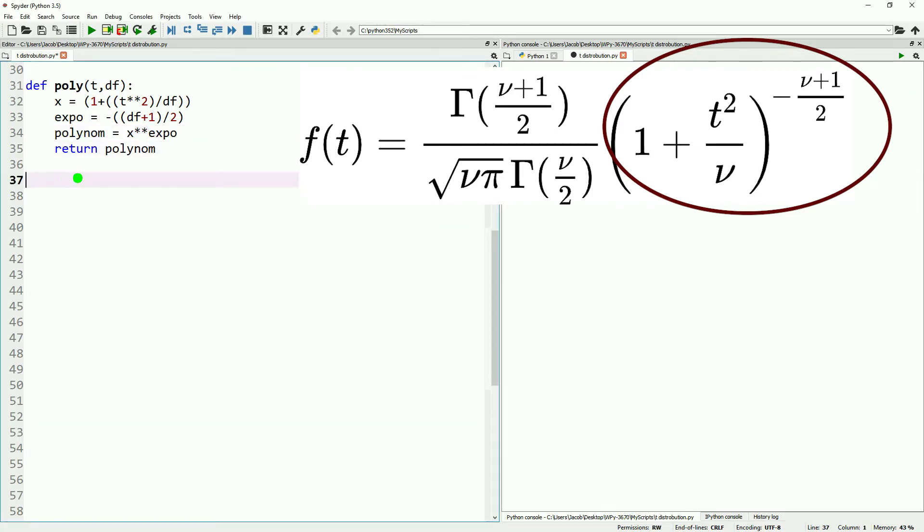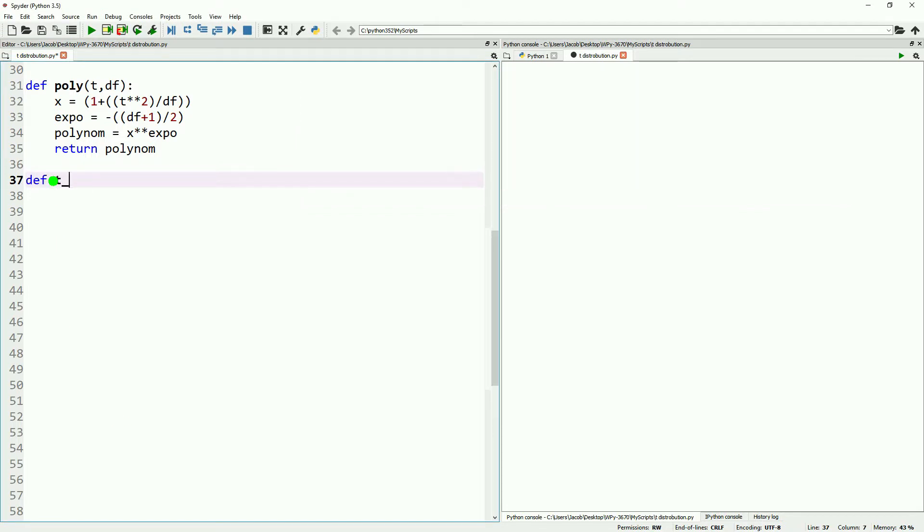With those parts explained, we can get rid of the function in the top right as it'll interfere with our screen space. Now we'll define our t probability distribution function, taking two arguments: t and degrees of freedom. We'll get our numerator, denominator, and poly, then return the probability value. This allows us to map out the probability distribution function for a given t distribution at a given degrees of freedom.